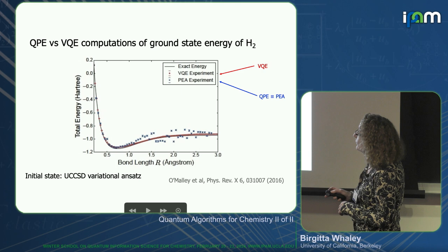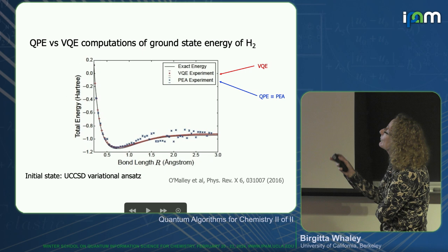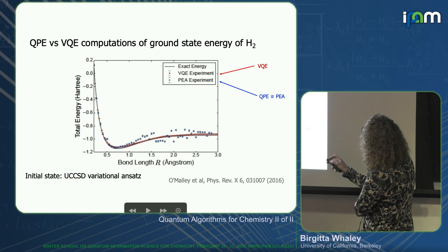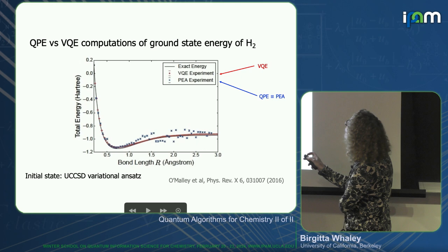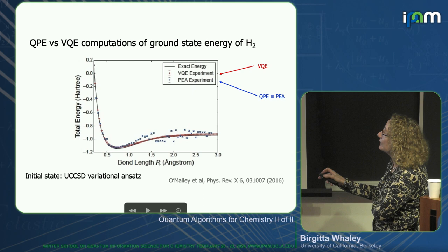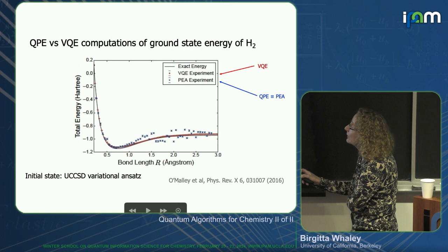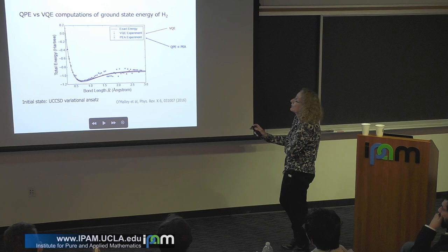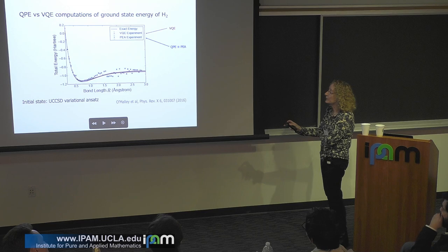Here are their results from 2016. Their initial state was UCCSD. The exact energy is the black line underneath the curves. The red dots are from the variational quantum eigensolver, and the blue crosses are from the quantum phase estimation algorithm. You can see there is really more noise on the phase estimation algorithm than on the VQE, which is not surprising because VQE has only one parameter, so it's not a hard optimization problem. It's a very small system, so they can measure and measure until they get the statistical errors down.